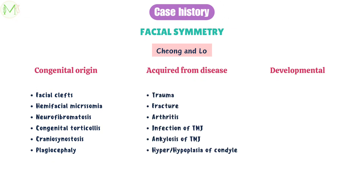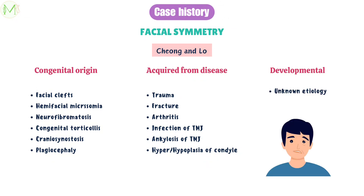Facial asymmetry can also be acquired, resulting from injury or disease such as trauma, fracture, arthritis, infection in the TMJ, facial pathologies or tumors, hyperplasia or hypoplasia of the condyle, and ankylosis of the TMJ. Asymmetry can also be developmental where the cause is unknown. Possible causes include habitual mastication on one side, constant facial pressure during sleep exclusively on one side, or other deleterious oral habits.